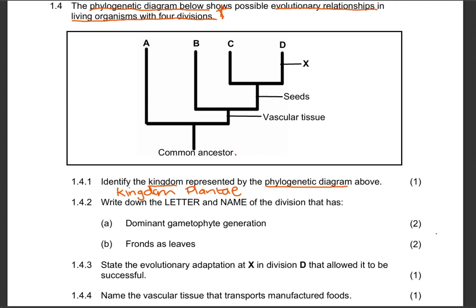Question 1.4.2: write down the letter and the name of the division that has a dominant gametophyte generation. You need to write the letter and the name — you are given the letters, so you need to match the letter to the division. We know that in plants there are four divisions: bryophytes, pteridophytes, gymnosperms and angiosperms. The division that has dominant gametophyte generation is obviously bryophytes — that's the only division with the gametophyte generation dominant. The rest have the sporophyte generation dominant. So the letter is Division A and the name is bryophytes.